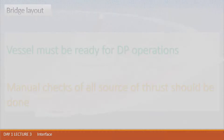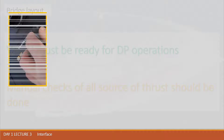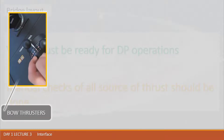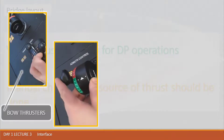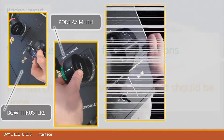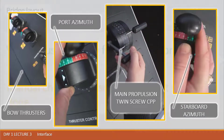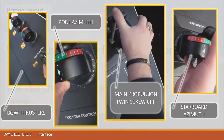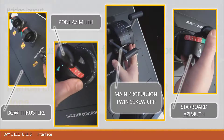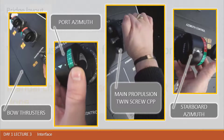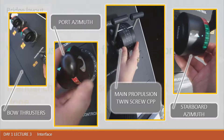The vessel must be ready for DP operations. All company procedures should be respected, appropriate logs completed, and appropriate checklists done — including both departments: the engine room and the bridge. As soon as the vessel is ready for DP, manual checks of all sources of thrust should be done. As shown in the example, with small demands and expecting feedback, you recheck both thrusters, port azimuth, main propulsion, and any other source of movable force on your vessel — all should be checked prior to transferring control to DP.